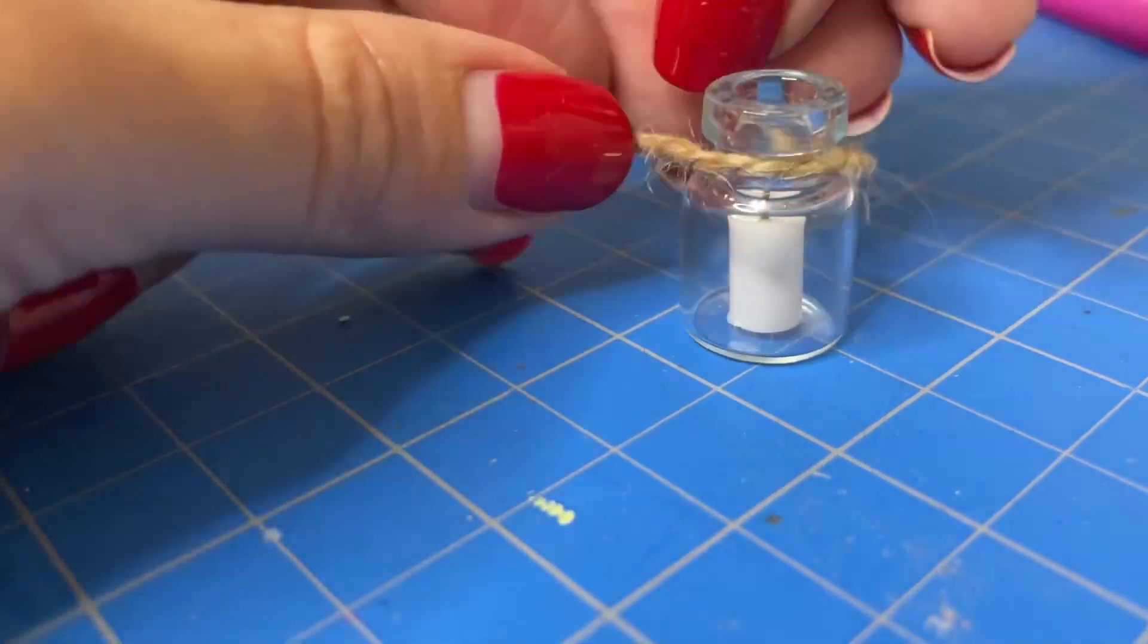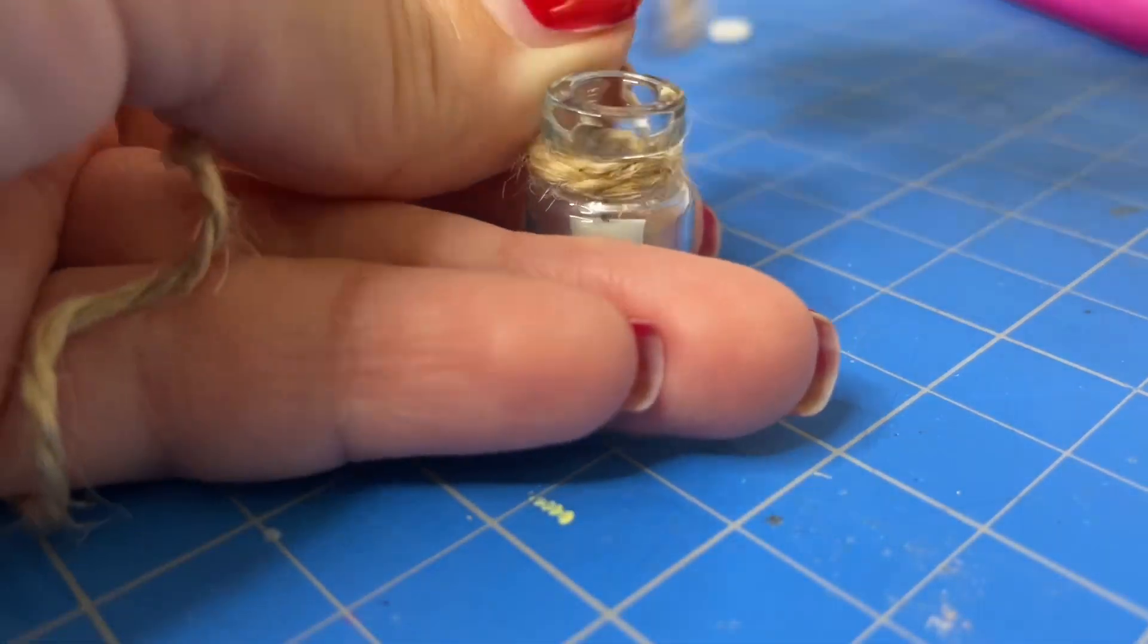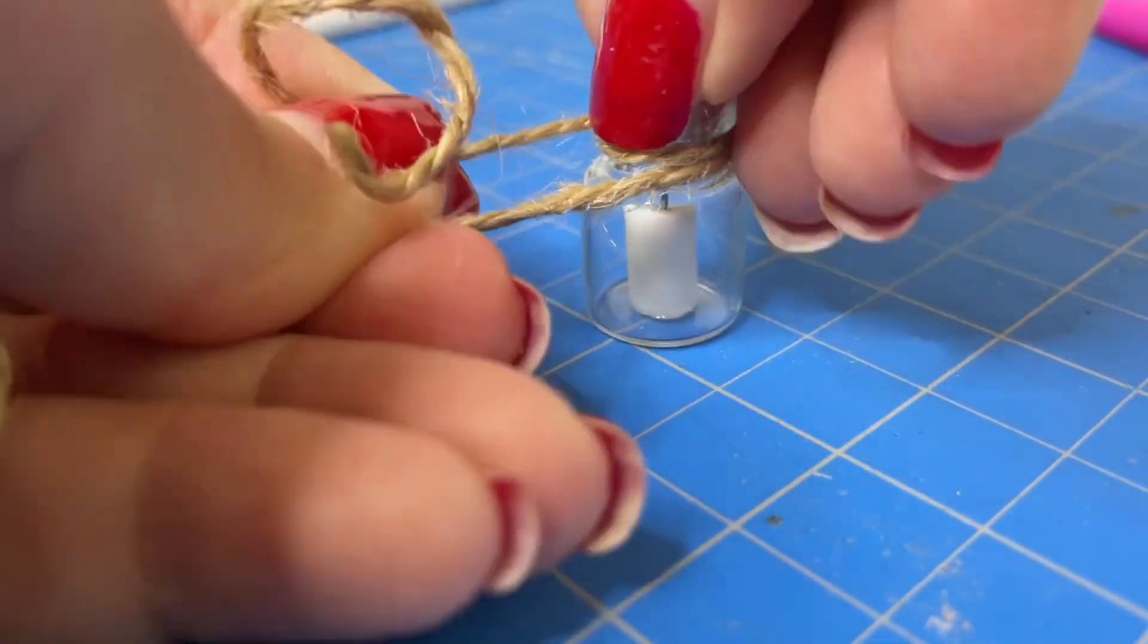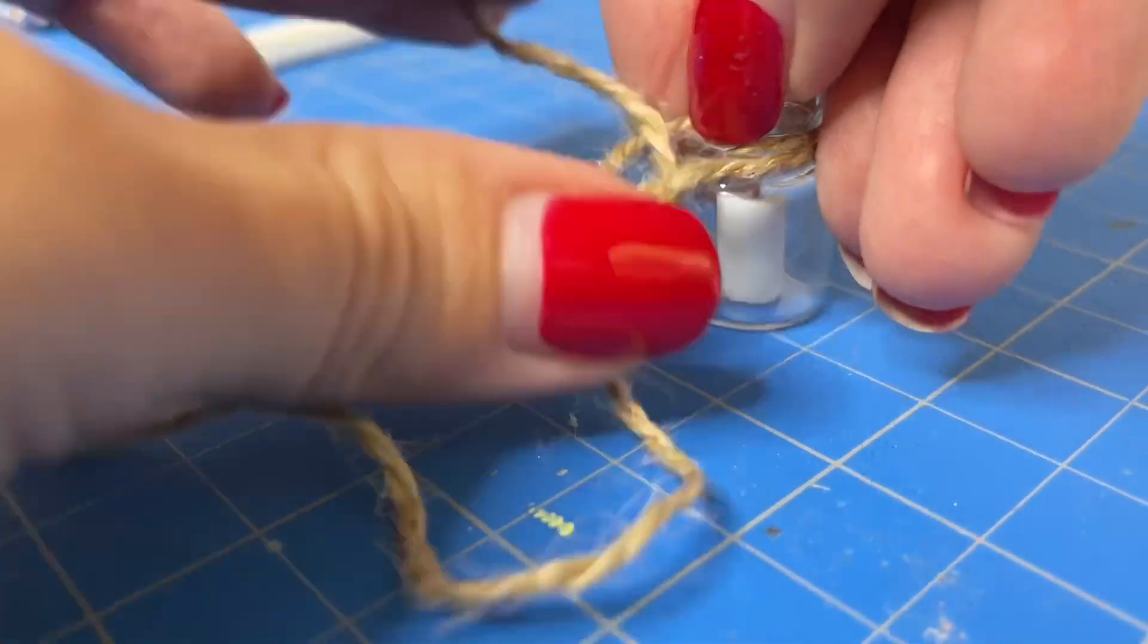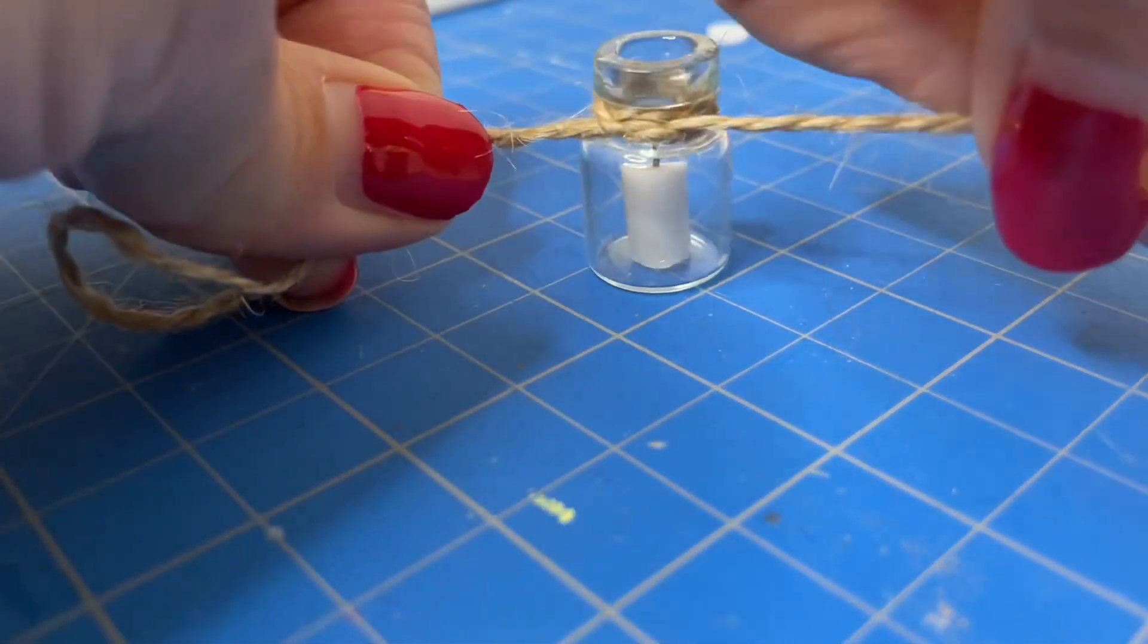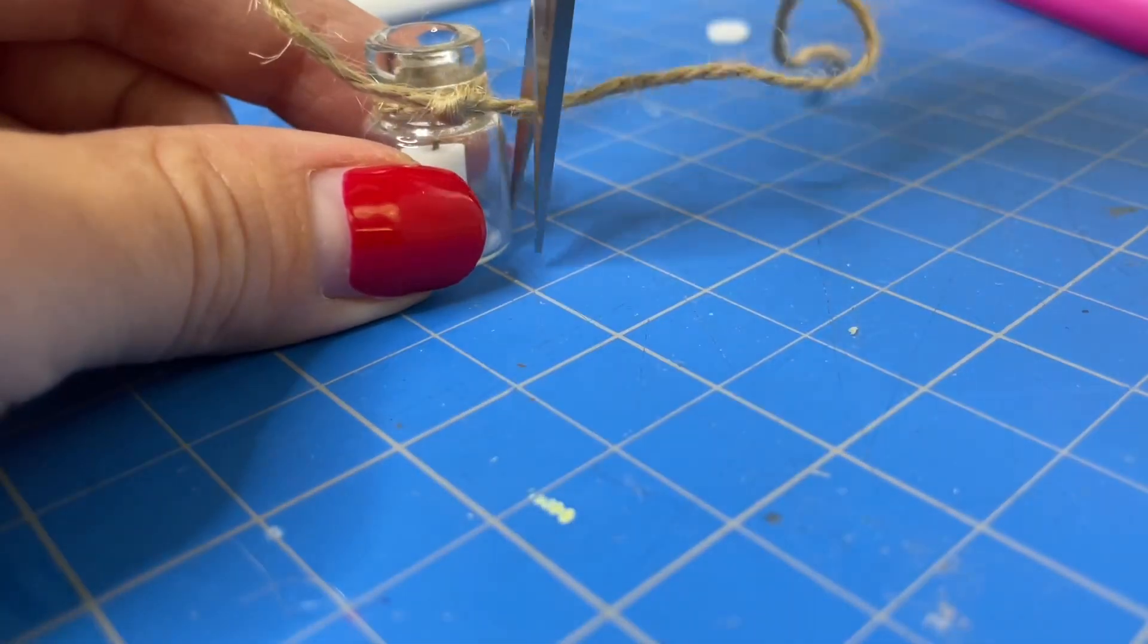And then just to make the jar look a little bit more decorative I'm going to use some twine string that I have. And it's going to create more of a beachy look. So I just tie it with a double knot and then once I'm done just trim the edges.